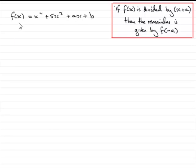Hi, welcome to the first part of this question where we've got to work out the value of a in f of x. f of x equals x to the 4 plus 5x cubed plus ax plus b. We've got to work out a given that when f of x is divided by x minus 2, the remainder is the same as when it's divided by x plus 1.